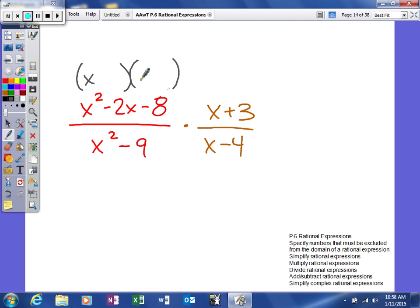We can use trial and error here because the leading coefficient is 1. Two numbers that multiply to give me -8 that will add to give me -2: -4 and positive 2. Down here, difference of squares.